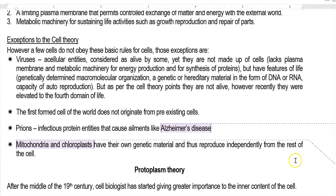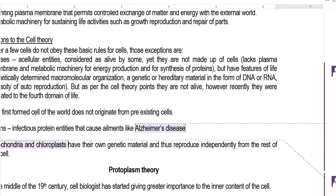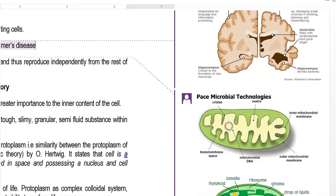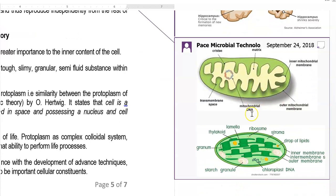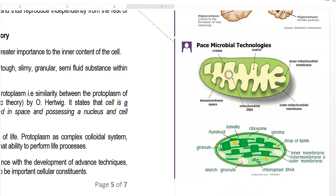The next exception is that mitochondria and chloroplasts have their own genetic material, and thus they reproduce independently from the rest of the cell. Mitochondria and chloroplasts are subcellular structures that are capable of undergoing independent cell division. You can see a mitochondrial DNA in the mitochondria structure and a chloroplast DNA in the chloroplasts. This DNA facilitates the independent division of mitochondria or chloroplasts compared to normal cell division — and this is again an exception to the cell theory.